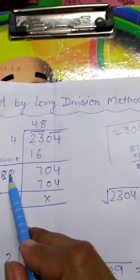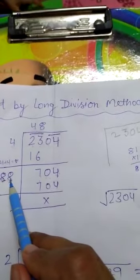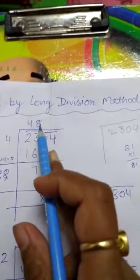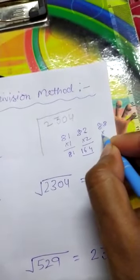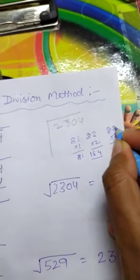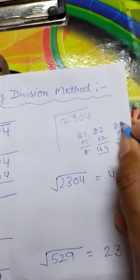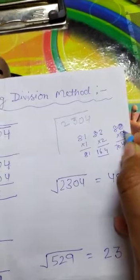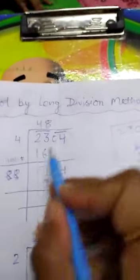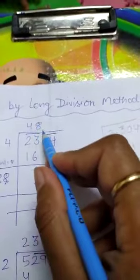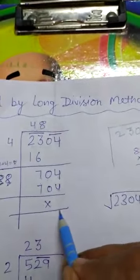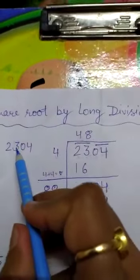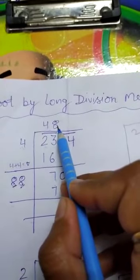We check: 88×8 gives 704. So we write 8 here and 8 here. 88×8=704, and the remainder is zero. Therefore the square root of 2304 equals 48.